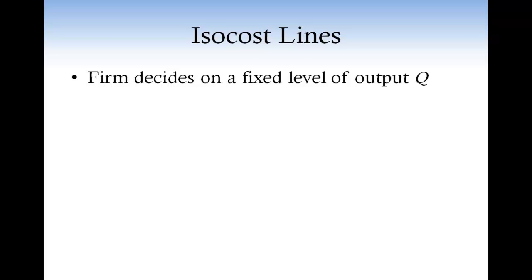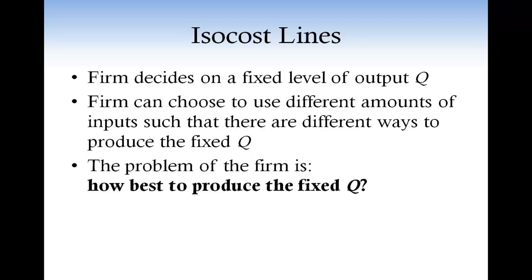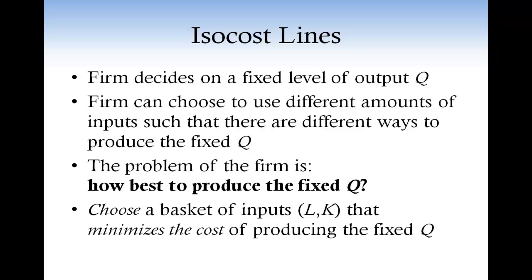At this stage, we assume that the firm has already decided how much output to produce. Now, since in general there will be different ways to produce this level of output Q, the firm still faces an interesting problem. The firm must choose how to produce the level of output Q. The objective is to produce Q by spending the least amount of money — that is, to choose the basket of inputs L and K that minimizes the cost of producing Q units of output.